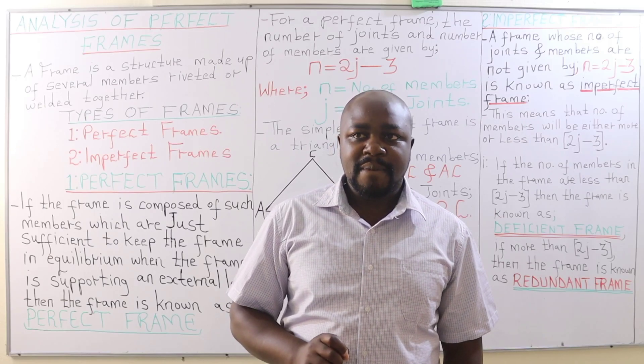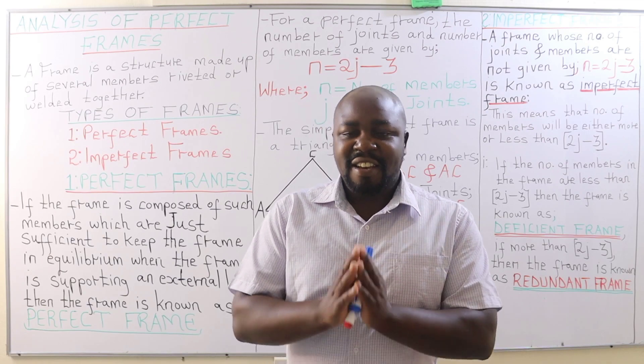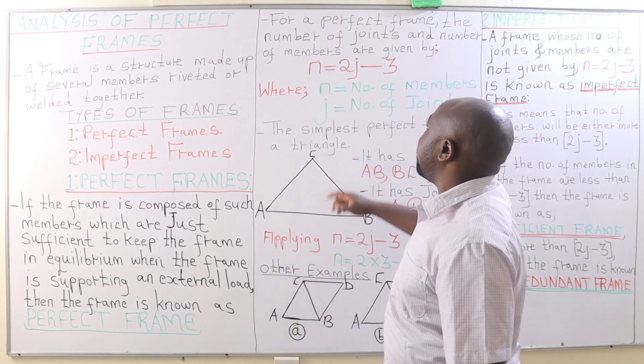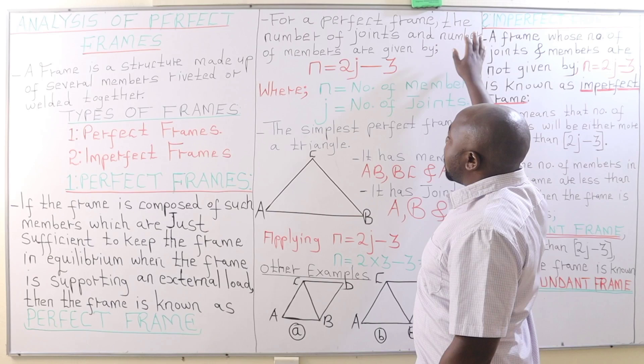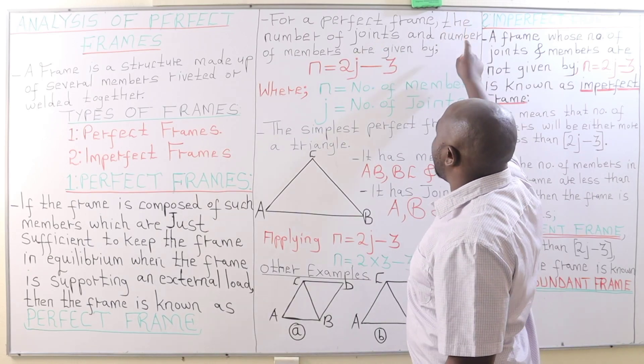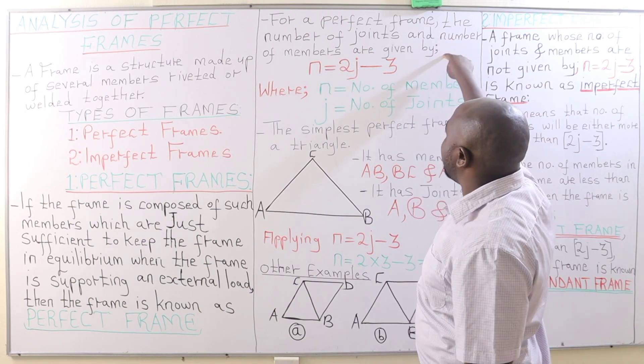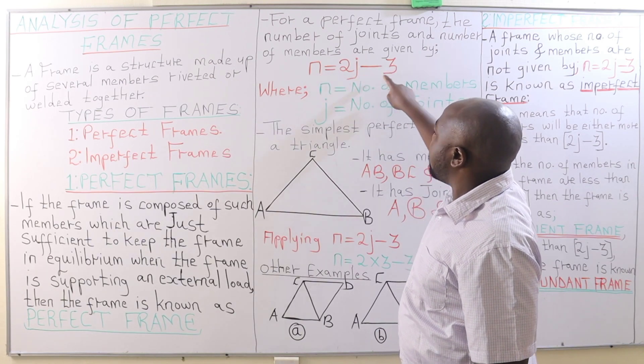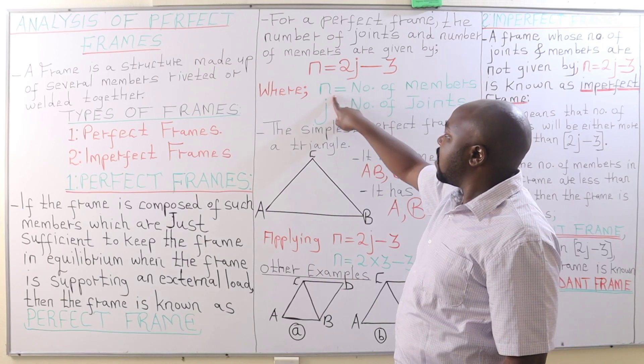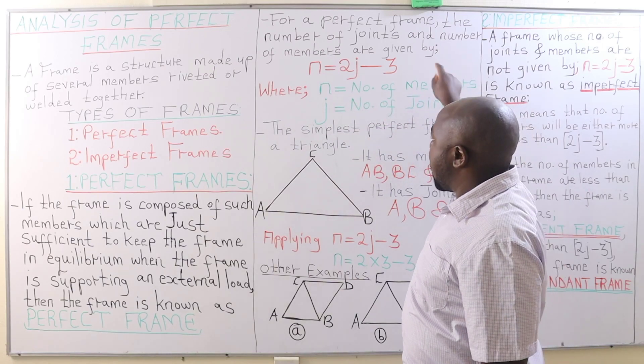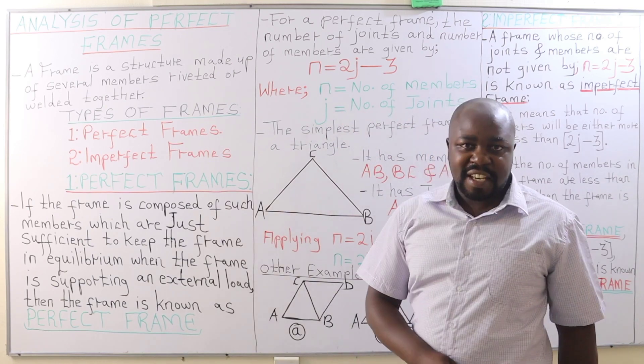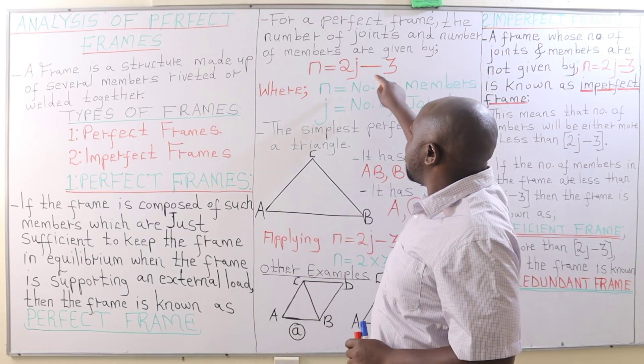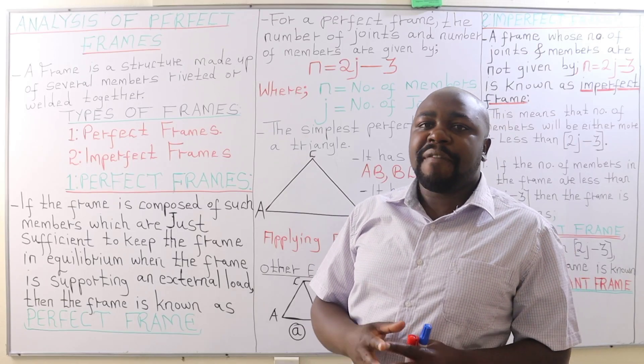For perfect frames, the number of joints and the number of members are given by this relation: n equals 2j minus 3, whereby n is the number of members and j is the number of joints. Therefore, when a frame satisfies this relation, then we are going to call that frame a perfect frame.